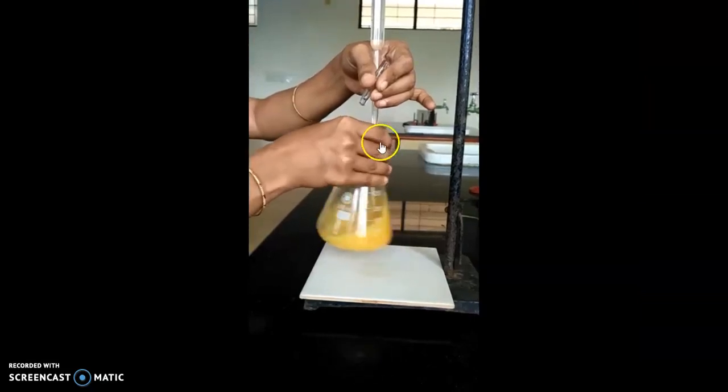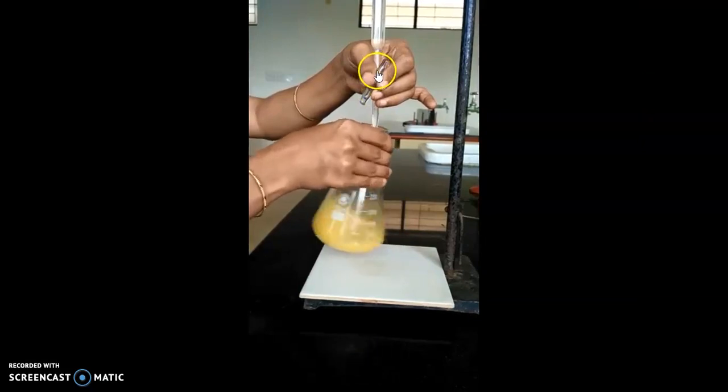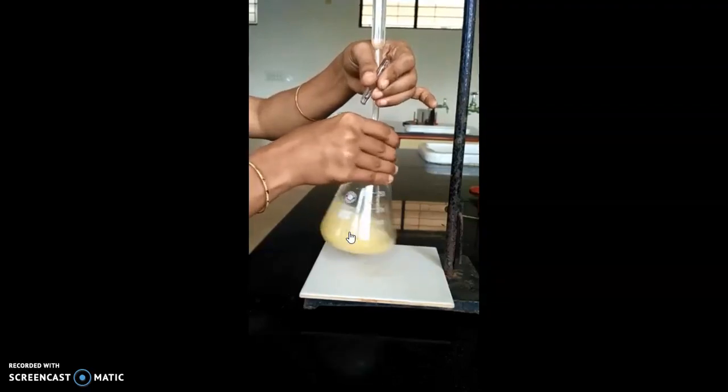Later, it has to be immediately titrated against hypo solution to make it to pale yellow color from yellowish-brown color.